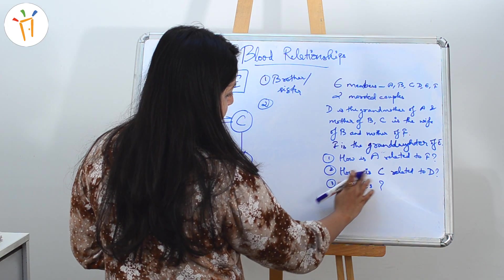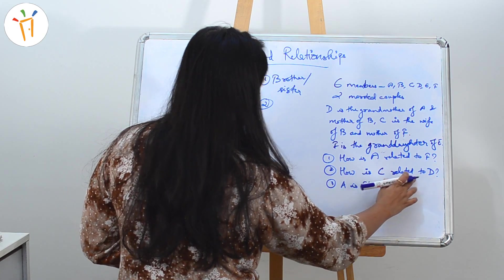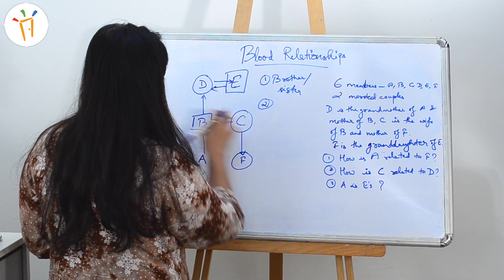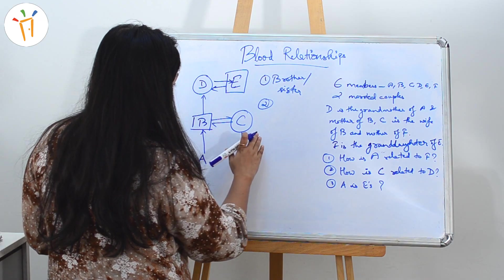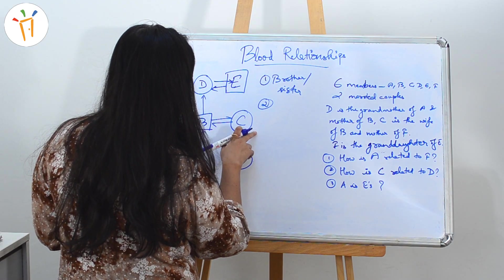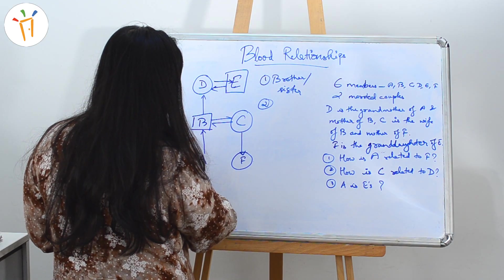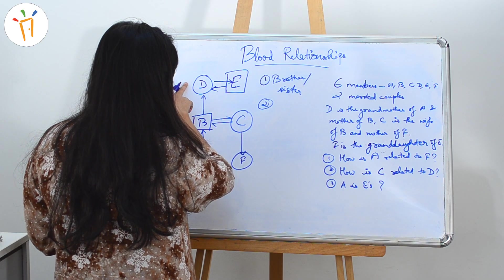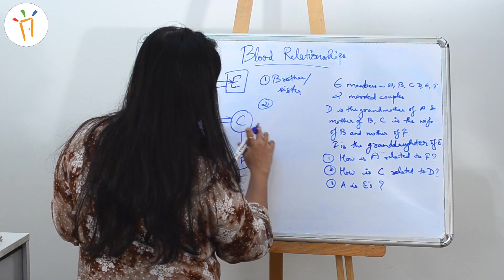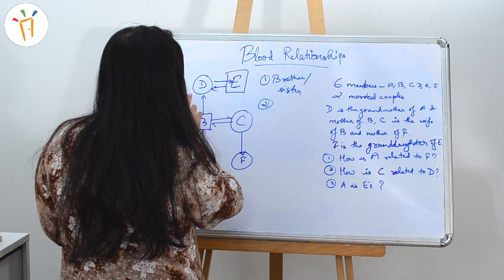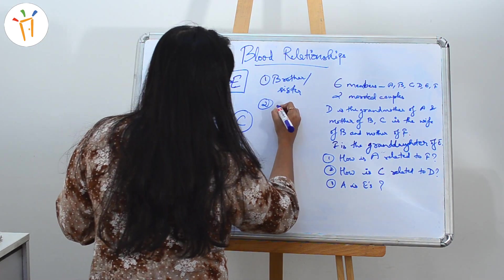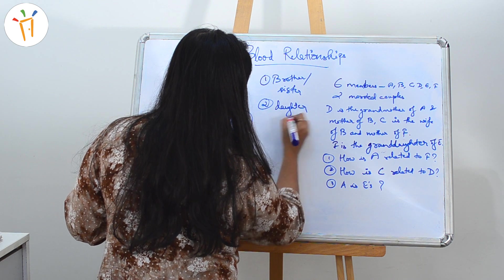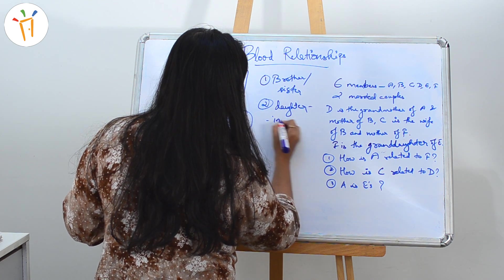Second part: how is C related to D? C is here and D is here. D's husband is E, and B's mother is D, so C will be the daughter-in-law of D. The answer is daughter-in-law.